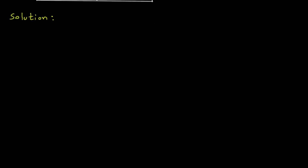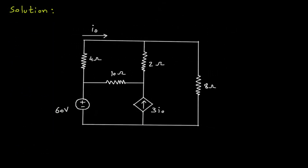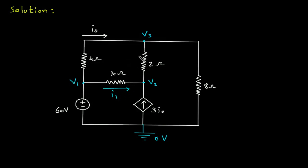First of all, we will redraw the circuit. Let's assume this is the reference node which is grounded, so it is 0V. Let's say this is node 1 with voltage V1, this is node 2 with voltage V2, and this is node number 3 with voltage V3. Now we will assume the direction of current: this is current I1, this is current I2, and this is current I3.